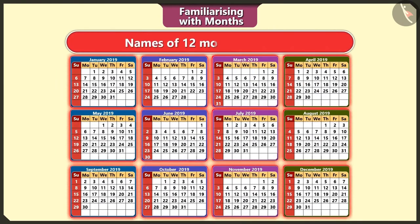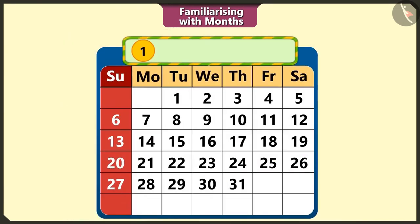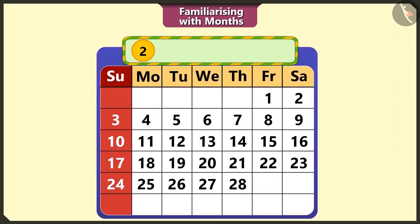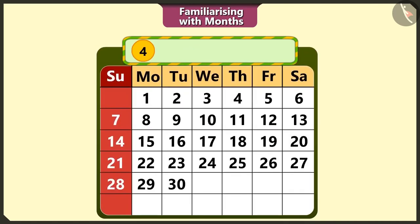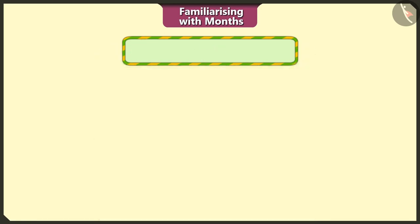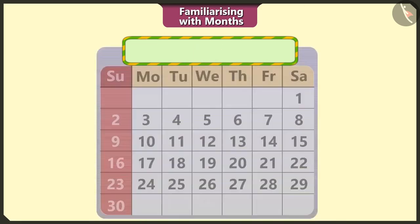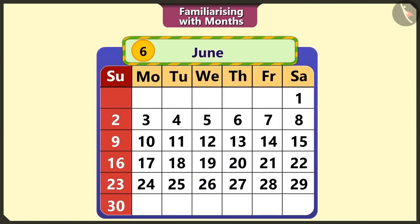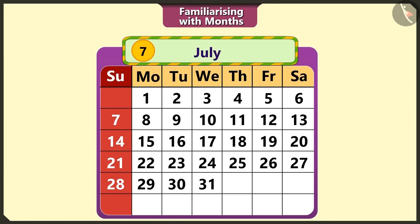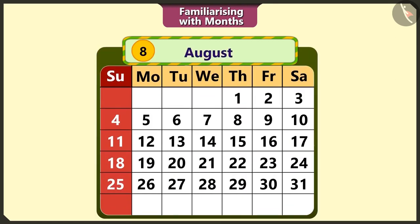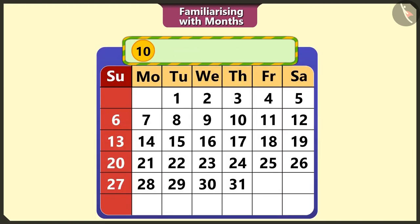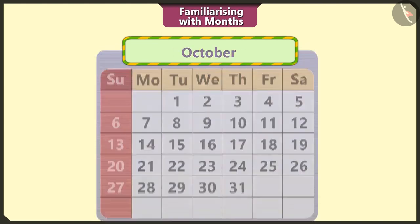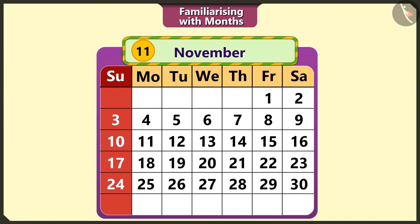Look, there are 12 months in a year. These are: 1st January, 2nd February, 3rd March, 4th April, 5th May, 6th June, 7th July, 8th August, 9th September, 10th October, 11th November, and 12th December.